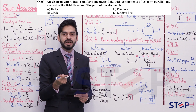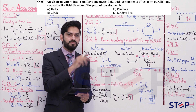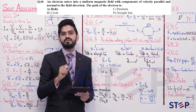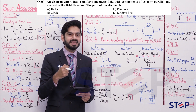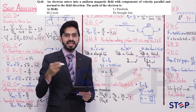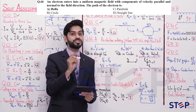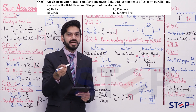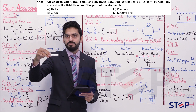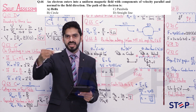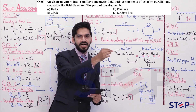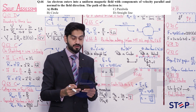The reason for helical motion: velocity resolves into two rectangular components. The component perpendicular to B causes circular motion. The component parallel to B causes forward motion (no magnetic force on it). Combined, the particle moves in a circular path while also advancing forward — resulting in a helical path.